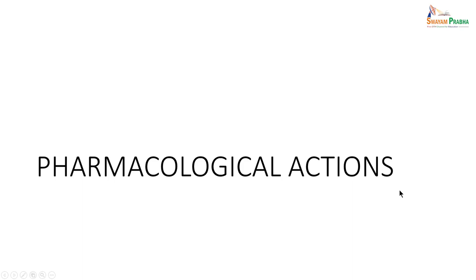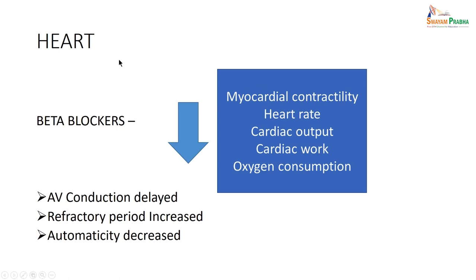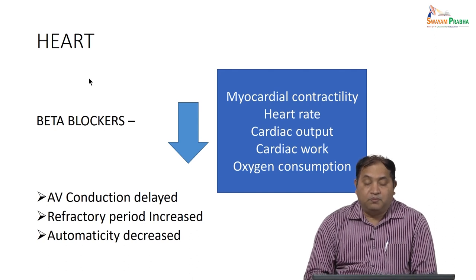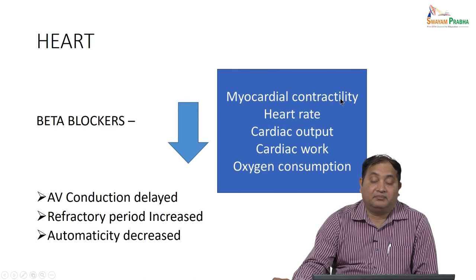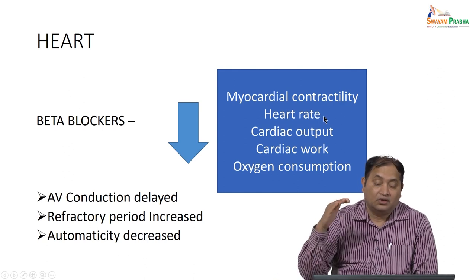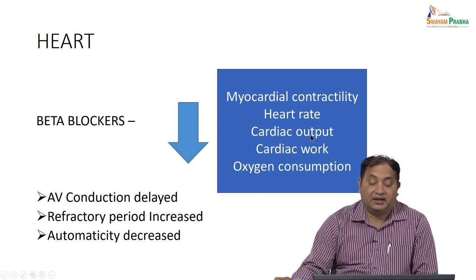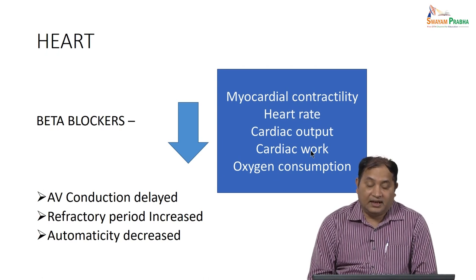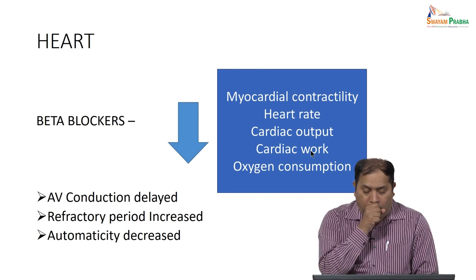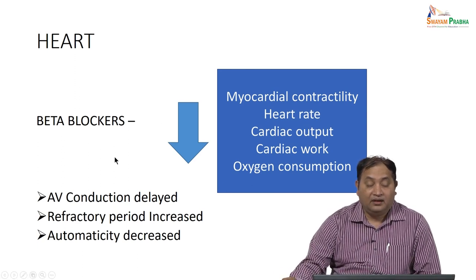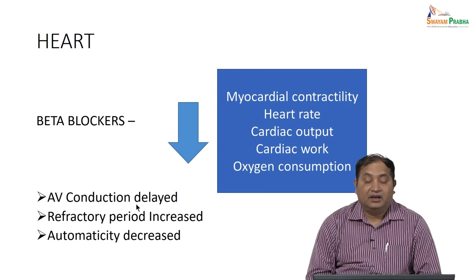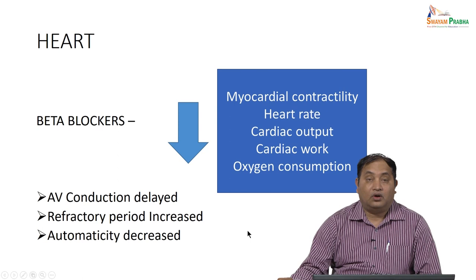Discussing the pharmacological action of beta blockers — the effect on the heart: most beta receptors in the heart are beta-1 receptors. Blocking beta-1 receptors decreases cardiac myocardial contractility, decreases heart rate (because conductivity is decreased), and decreases cardiac output and cardiac workload. This also helps reduce oxygen consumption, which is why beta blockers are selected in heart failure. Regarding the mechanism: beta blockers help in AV conduction delay — from SA node to AV node — and the refractory period increases while automaticity decreases.